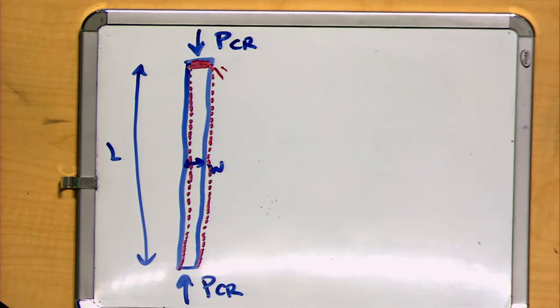And this critical load tends to be the boundary between when it's stable and when it's unstable. Once you're above the critical load, it's very likely that the smallest amount of deflection laterally will result in your critical buckling failure.